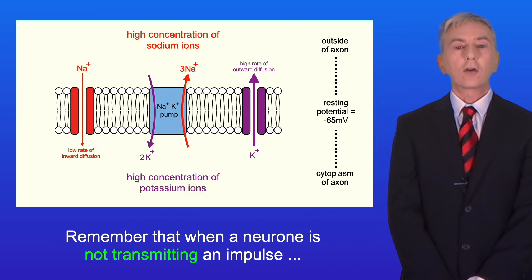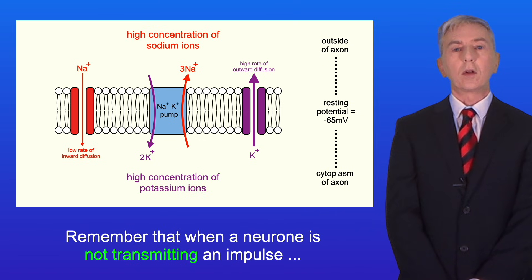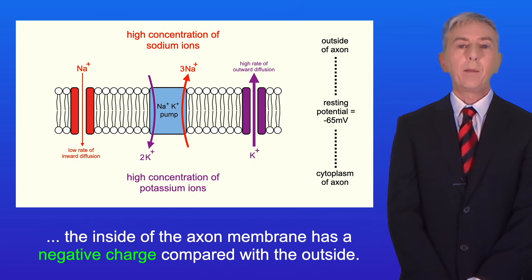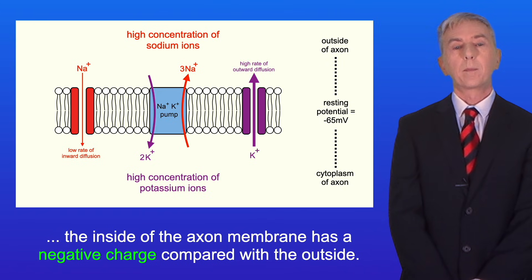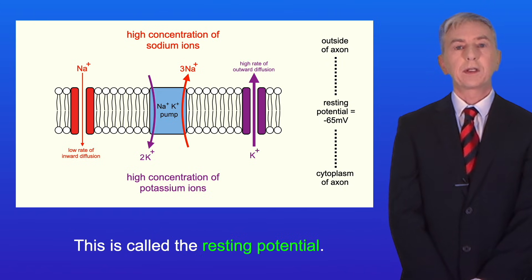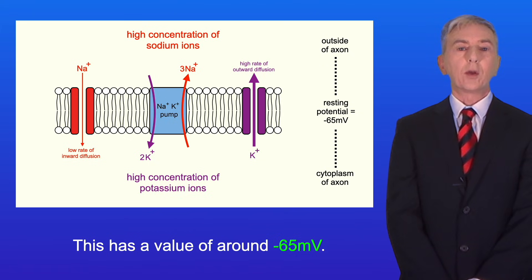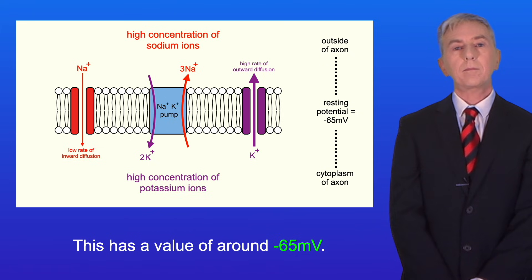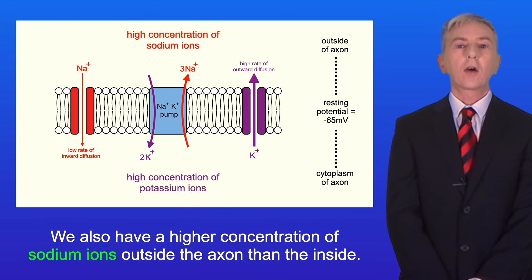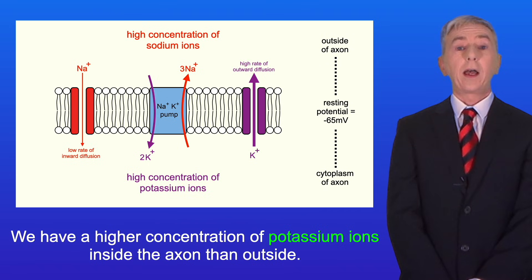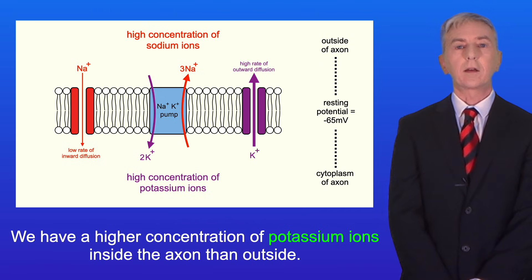Remember that when a neuron is not transmitting an impulse, the inside of the axon membrane has a negative charge compared with the outside. This is called the resting potential and has a value of around minus 65 millivolts. We also have a higher concentration of sodium ions outside the axon than inside, and a higher concentration of potassium ions inside the axon than outside.